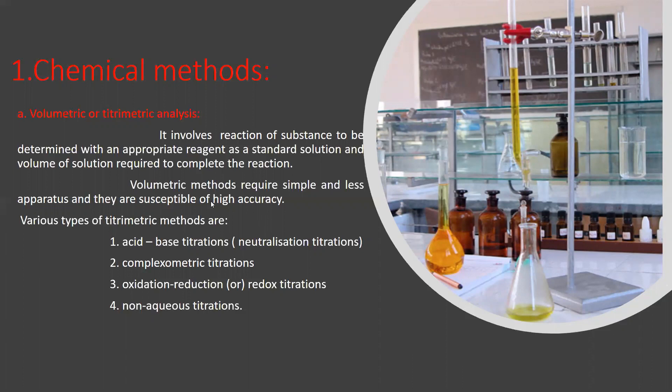Various types of titrimetric methods are divided into four types. Those are acid-base titrations, also known as neutralization titrations. Second one is complexometric titrations, and third one is oxidation-reduction or redox titrations. And finally the fourth one is non-aqueous titrations.